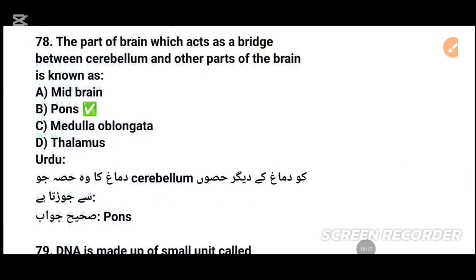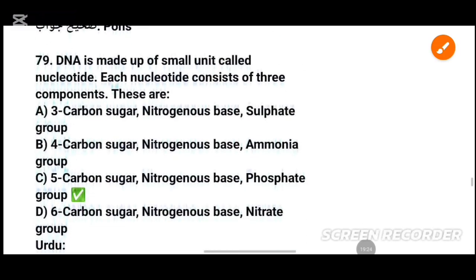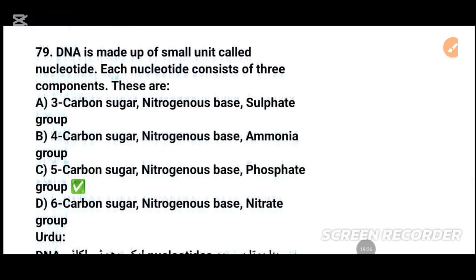MCQs number 62: Which part of the brain acts as a bridge between the cerebrum and other parts of the brain? The answer: pons — option B, tick that. MCQs number 79: DNA is made of small units called nucleotides. Each nucleotide consists of three components.